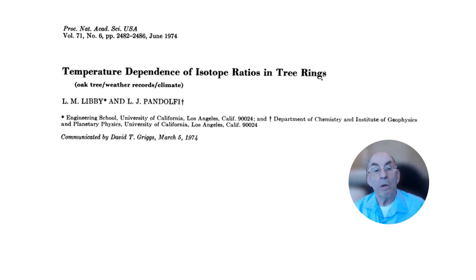In nature, most oxygen atom nuclei contain eight protons and eight neutrons — that's oxygen-16. But about two-tenths of a percent of oxygen nuclei contain eight protons and ten neutrons; that's called oxygen-18. Likewise, most carbon nuclei contain six protons and six neutrons — that's carbon-12 — but a small percentage have six protons and seven neutrons, which is carbon-13. Similarly, most hydrogen nuclei contain just a single proton, but a few contain a proton and a neutron, and that's called deuterium.